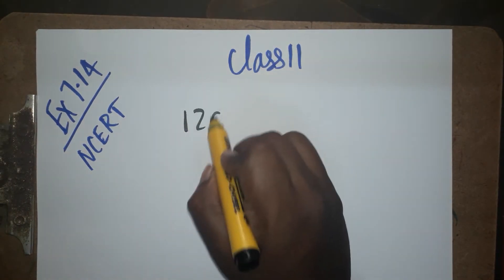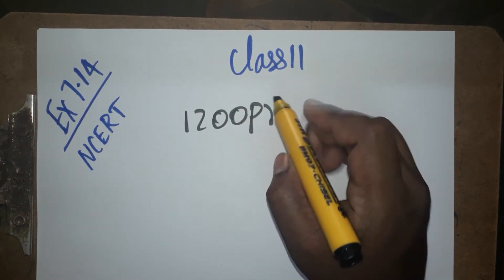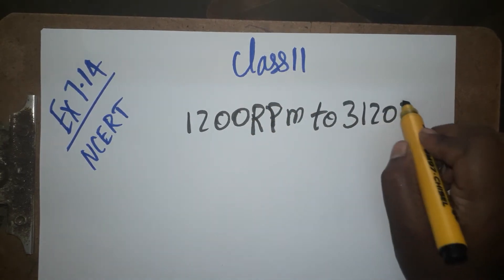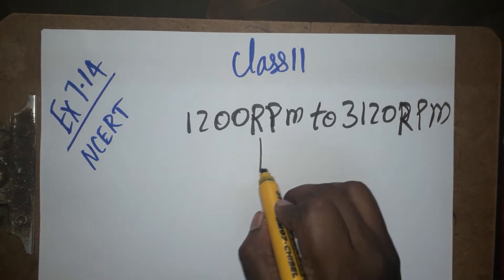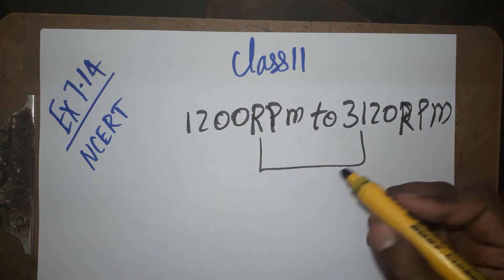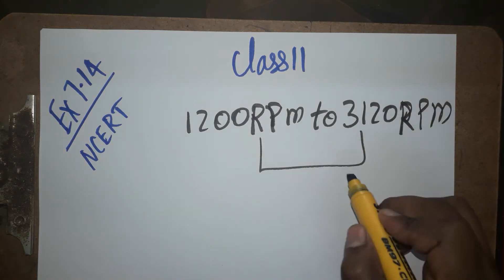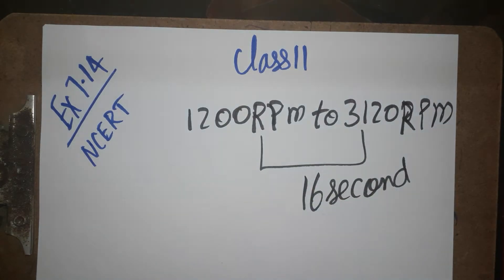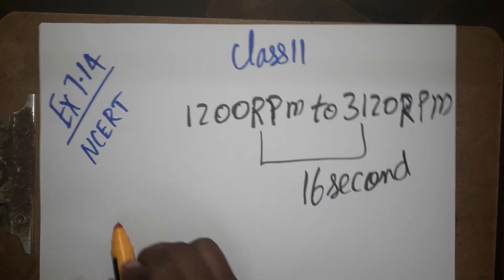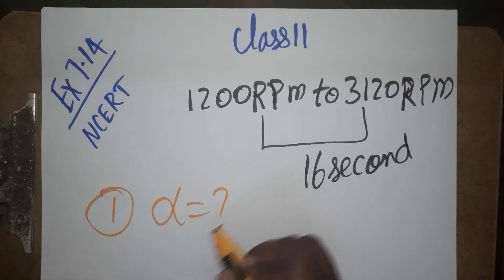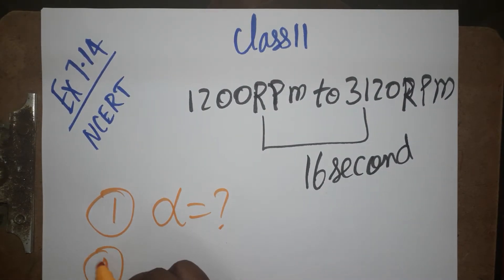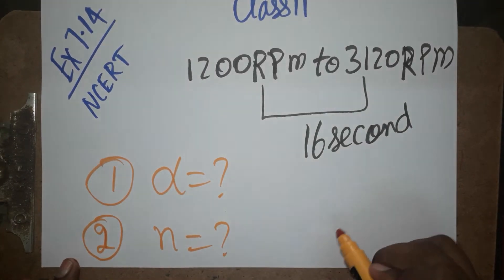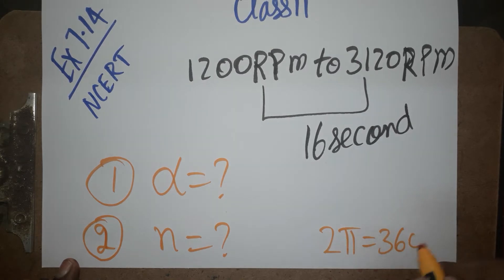The rotation goes from 1200 RPM to 3120 RPM, so it is getting increased — angular acceleration will be positive. The time taken during this process is 16 seconds. The first question is: what is the angular acceleration? The second question is: how many rotations will there be? In a single rotation there is 2π, that is 360 degrees.